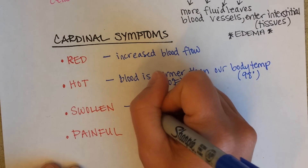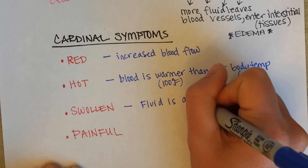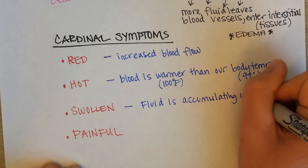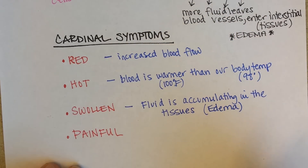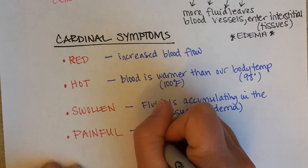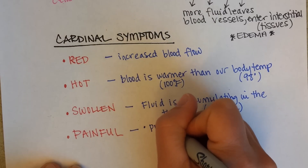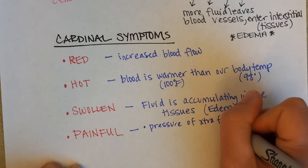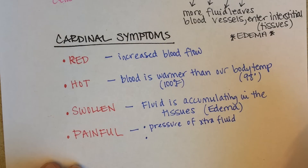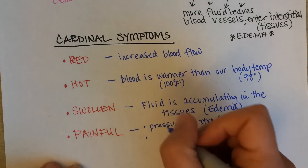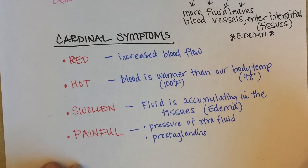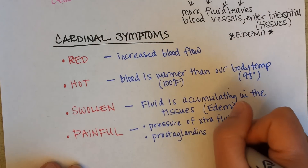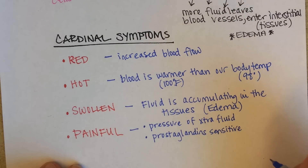And then swollen — fluid is accumulating in the tissues, we call that edema. And painful for really two reasons: one is just the pressure of the extra fluid, and the other is because when there is inflammation, there are chemicals released from the nearby cells called prostaglandins. These are little chemicals that come out of cells to communicate with other cells that there is a problem, and they sensitize the nerve endings and increase the sense of pain.